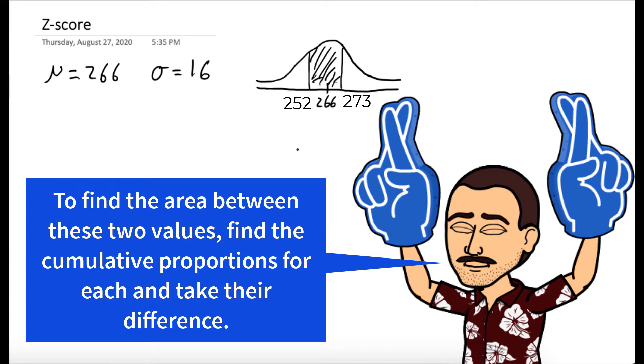The way we're going to do this is we're going to find the area to the left of 273, I'll shade that in blue, and subtract off this area in red. What that will leave us is this area I'll shade again in black. So that's the area we're trying to find.